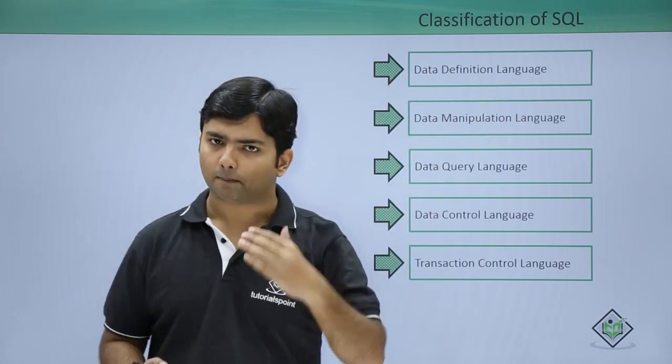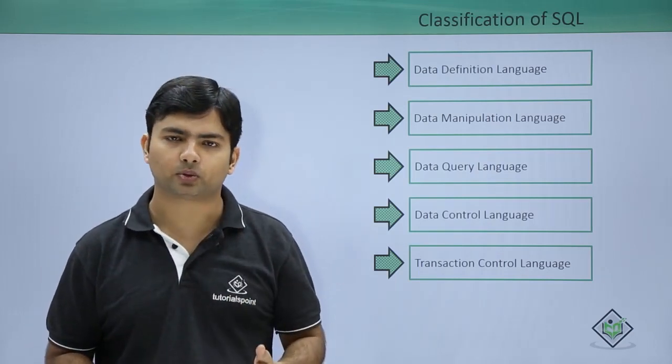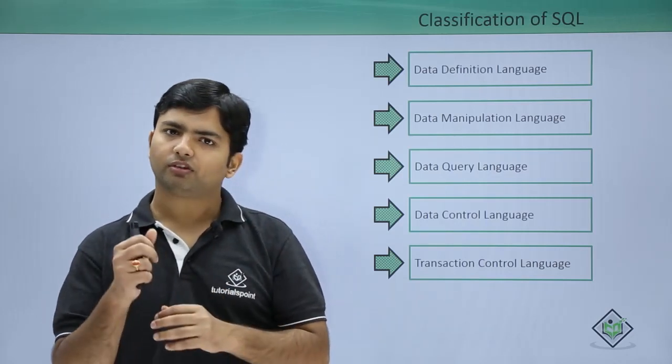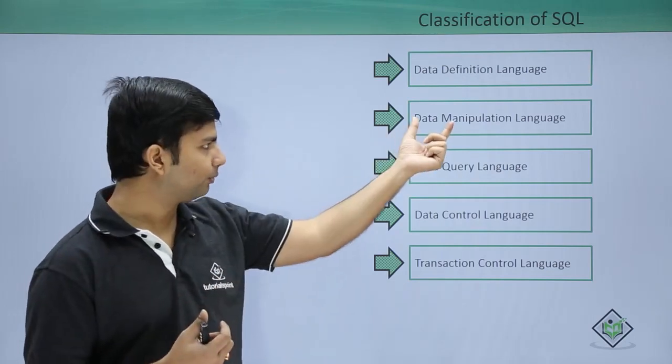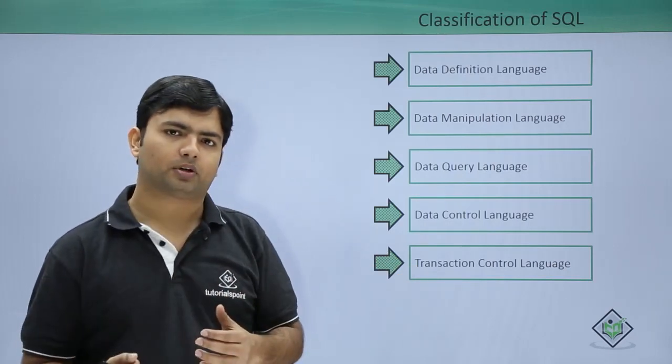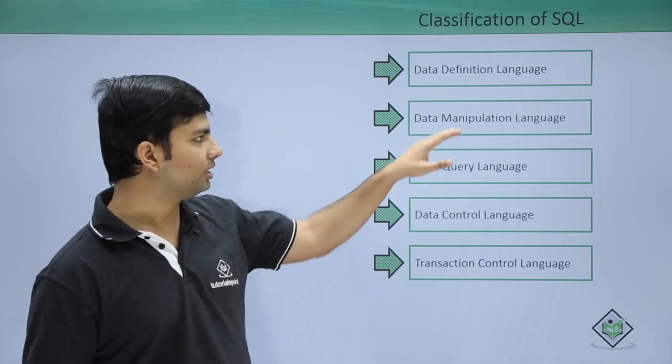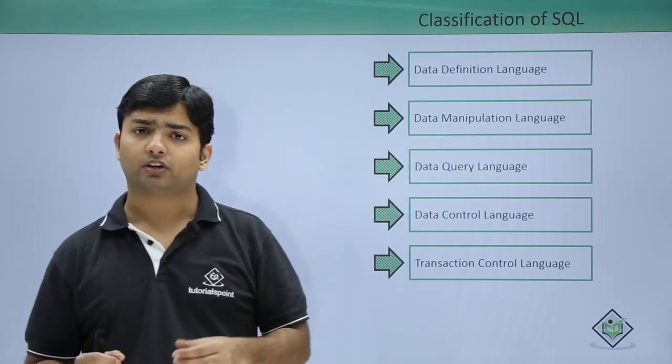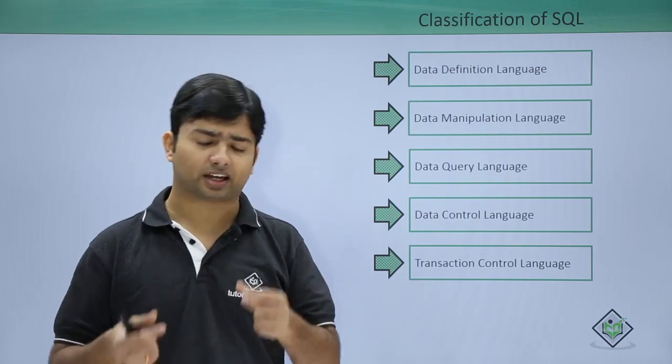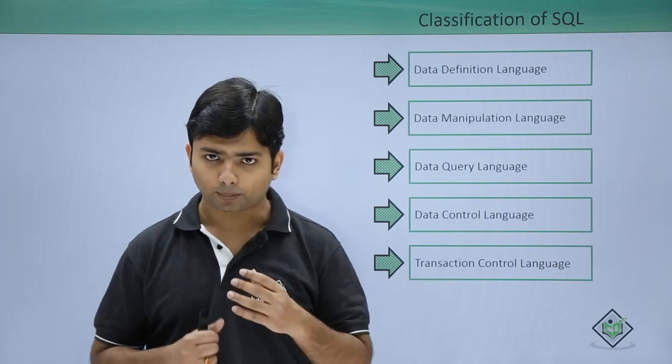Once an object is created, suppose a table is created, the next thing you'll do is write some data into it - one record, two records, and so on. Whenever you add a new record, that will be DML - Data Manipulation Language. Any SQL command which changes the data in a table is categorized in Data Manipulation Language, like inserting a new row, updating an existing record, or deleting a record.